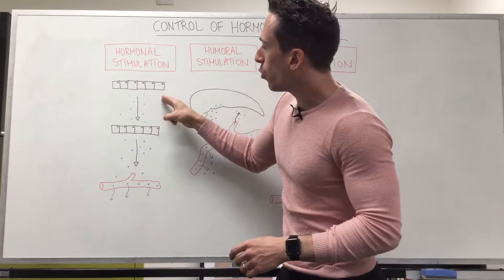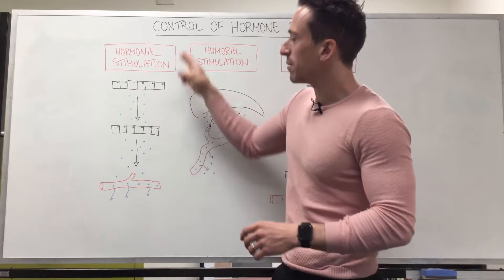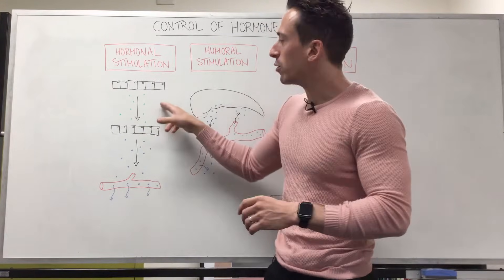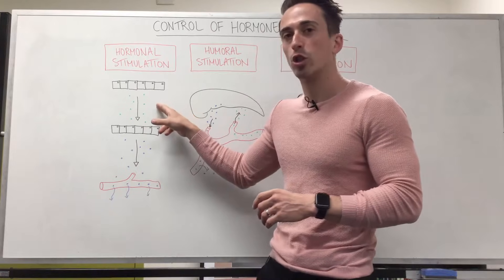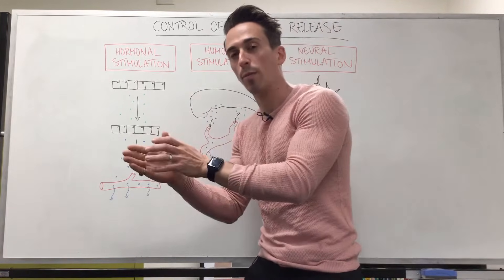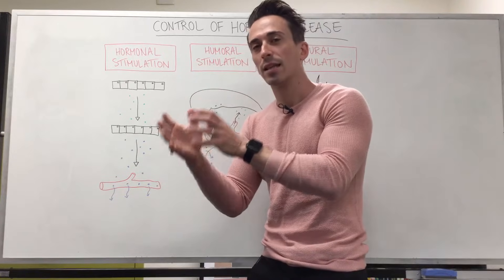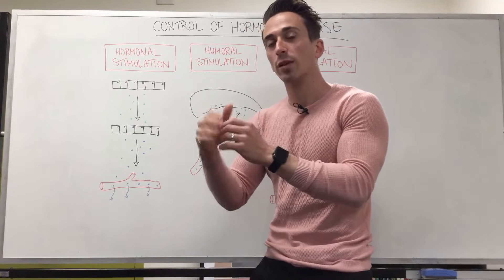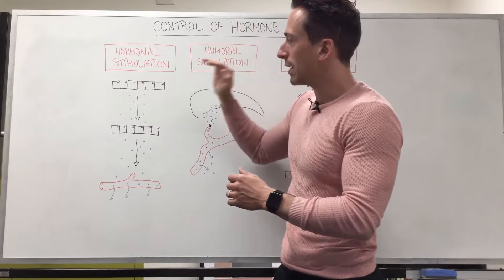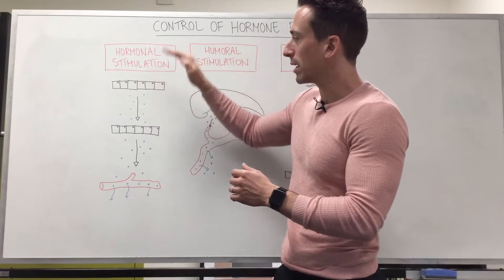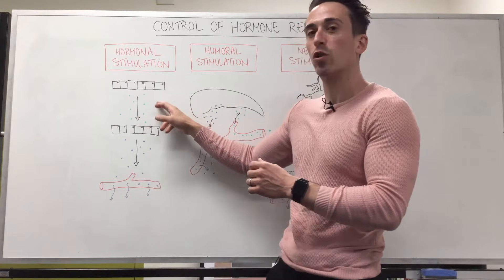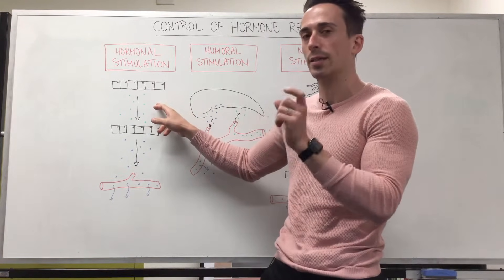The first set of hormones that are released — those that stimulate the next set of hormones to be released — usually have the word 'tropic' in their name, like adrenocorticotropic hormone. These are hormones that are released to stimulate the adrenal gland to release its hormones. So if a hormone stimulates another cell to release a hormone, that first hormone usually has 'tropic' in its name.